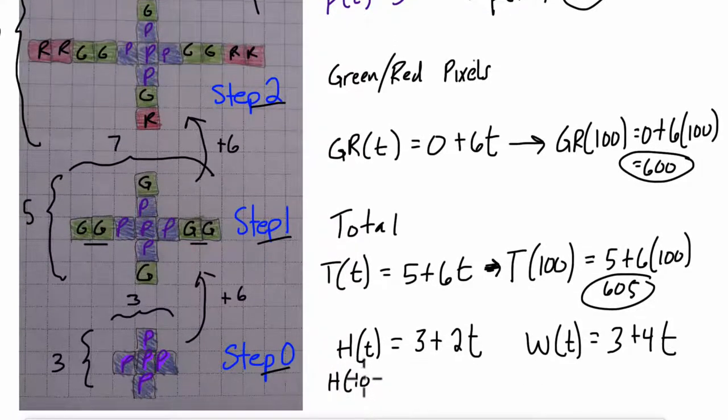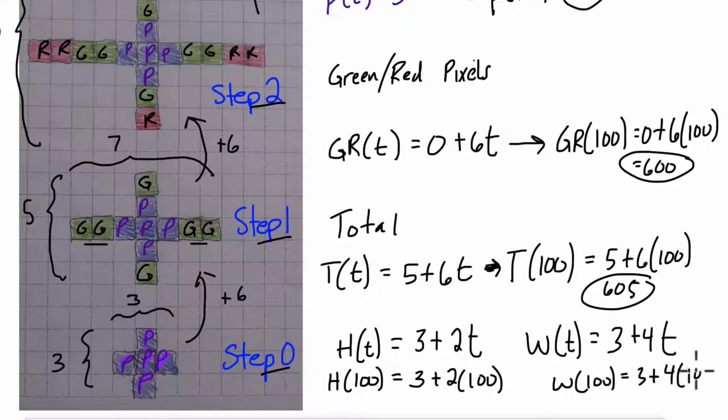The height at step 100, that'll equal 3 plus 2 times 100, and the width will equal 3 plus 4 times 100. So that means that the height will equal 3 plus 200 is 203, and the width will equal 3 plus 400, or 403.